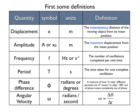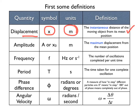First we'll start with displacement. The symbol for displacement is x. Displacement is defined as the instantaneous distance of the moving object from its mean position. By mean position, we mean the equilibrium or middle position. Displacement is usually measured in meters, although it could be measured in any other distance units such as centimeters or millimeters.